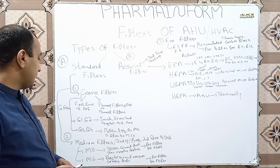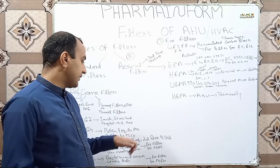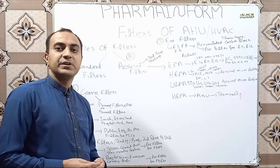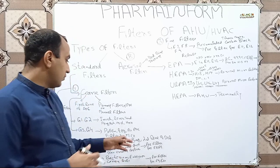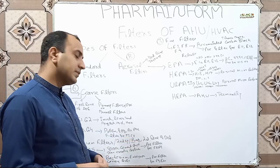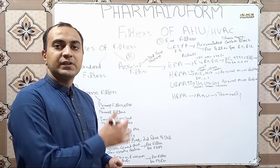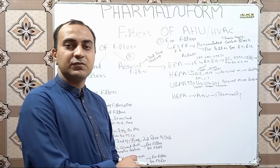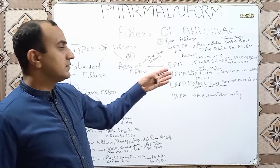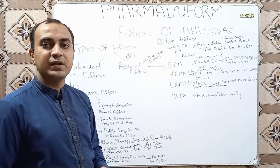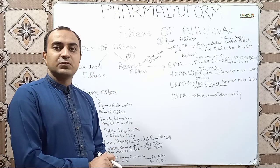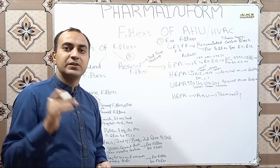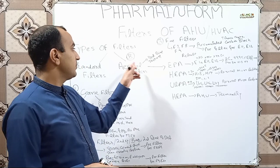The next class is medium filters. Medium filters are known as the second line of defense, also known as back filters or commonly known as secondary filters. The first line of defense provides protection to the second line of defense, and both together provide protection to the third line of defense, which consists of very efficient and critical filters. We use the first and second lines of defense to protect the main filters, which are known as tertiary filters or aerosol filters.